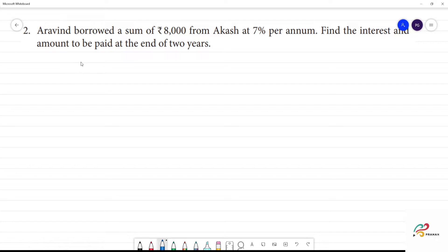If we get the data, we can get the principal amount. The principal amount is Rs.8,000. Rate of interest R is equal to 7% per annum. Find the interest and amount paid at the end of 2 years. So, number of years, time is equal to 2 years.